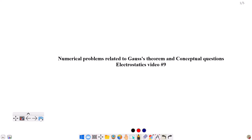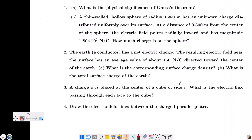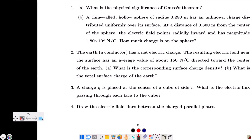Let's start. In this question: what is the physical significance of Gauss's theorem? The physical significance is essentially the statement of Gauss's theorem. The mathematical statement is: Phi equals Q by Epsilon-naught. Phi is the electric flux — the number of electric field lines leaving the closed surface. Q is the charge enclosed by the closed surface, and Epsilon-naught is the permittivity of vacuum.